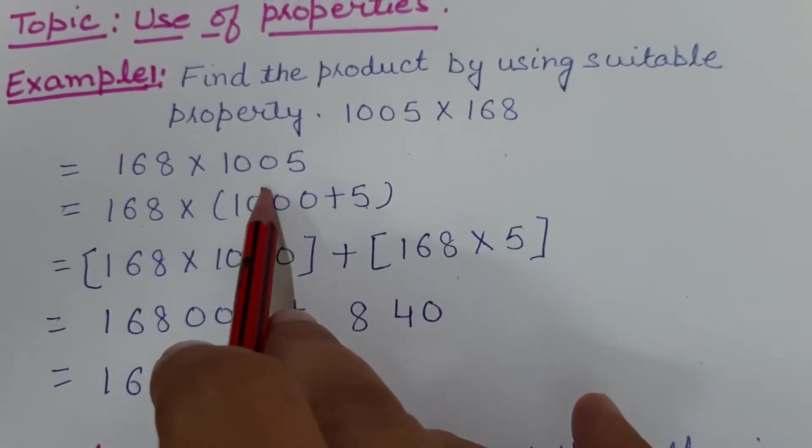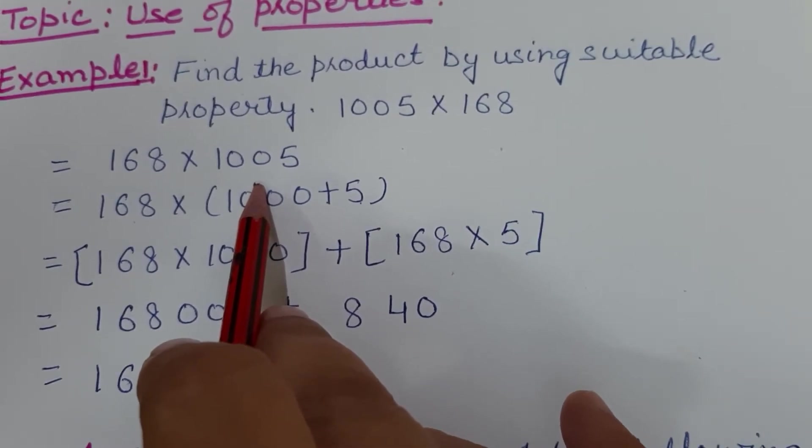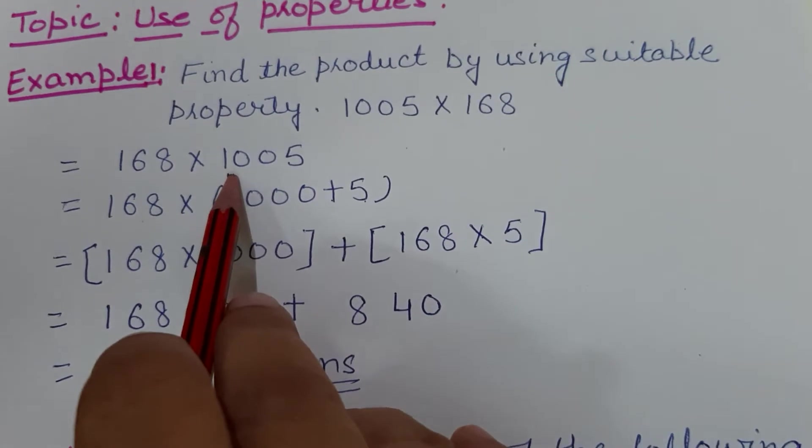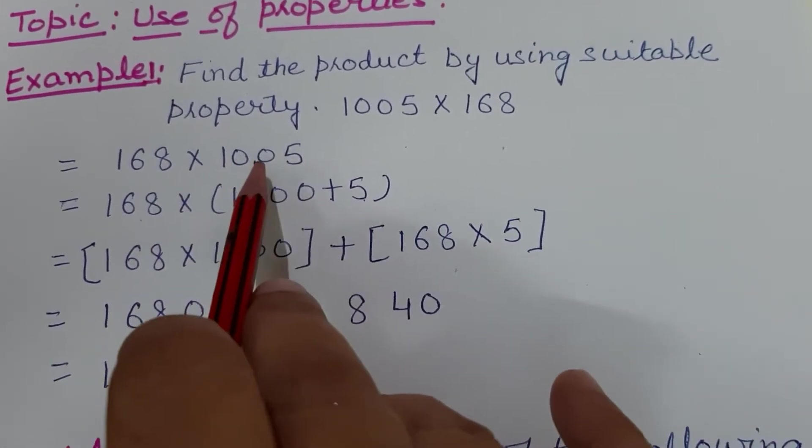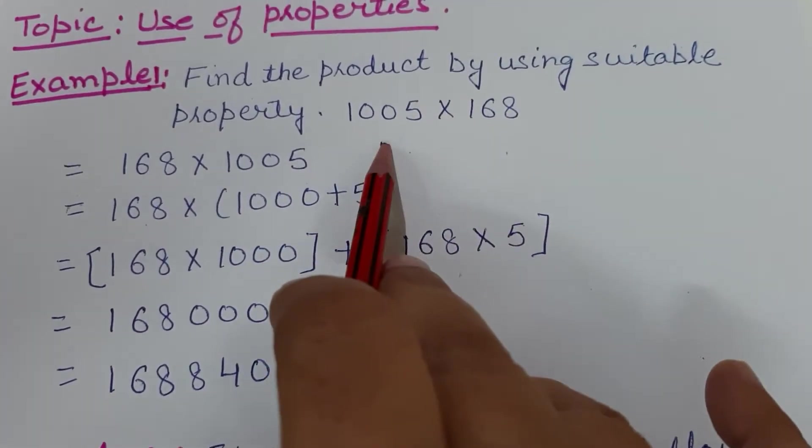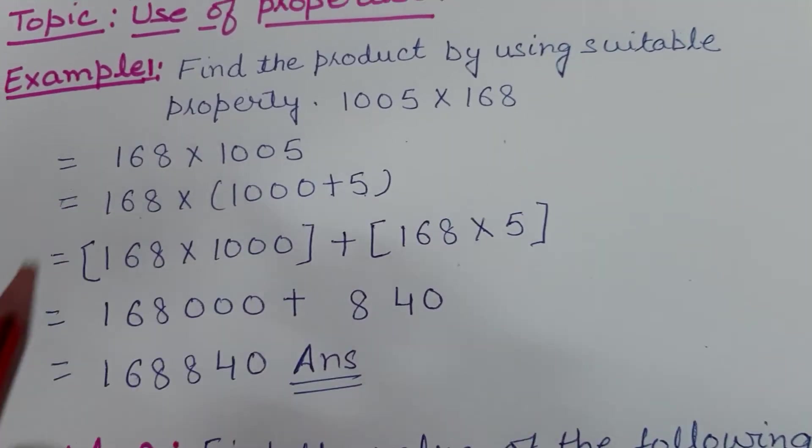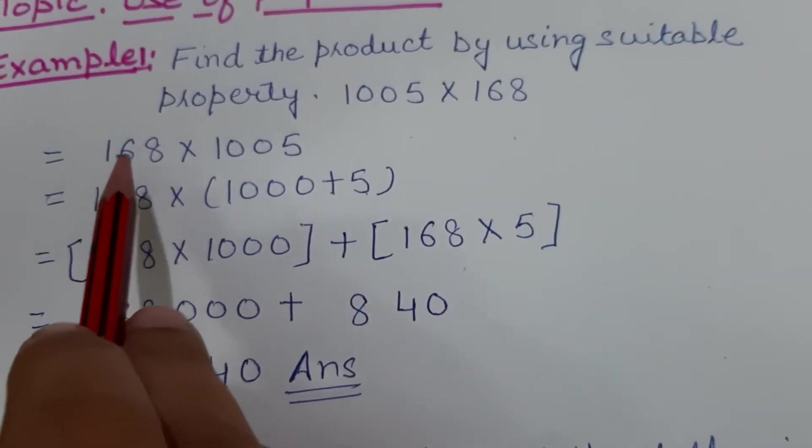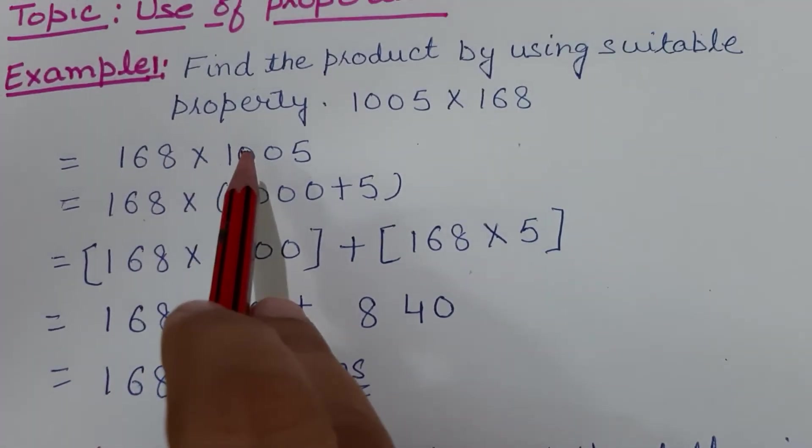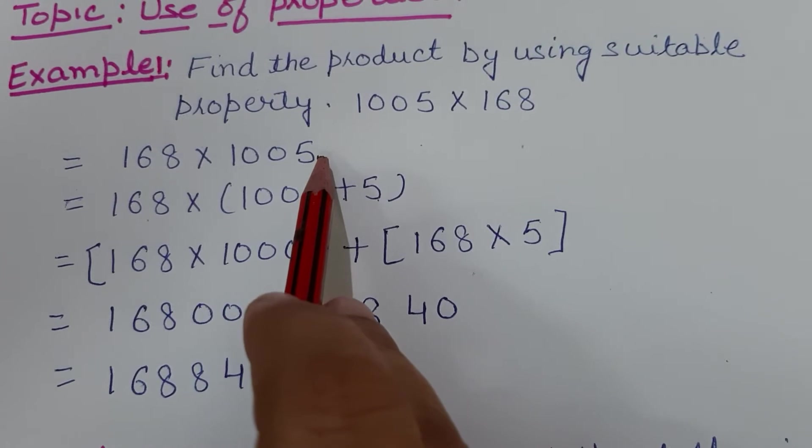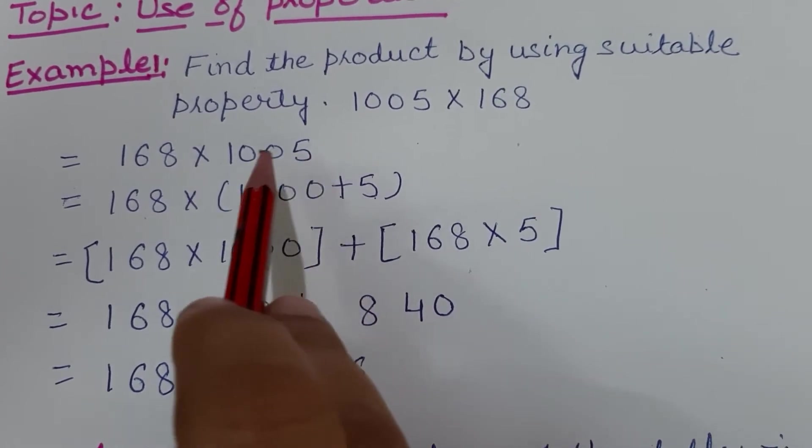No need to change their places if it's already positioned correctly. Let's start: 168 multiplied by 1005. Now, which number is nearest to hundreds, thousands, or tens? That number will be broken up. So 168 as it is, multiplication sign as it is, and now this 1005 we can break.